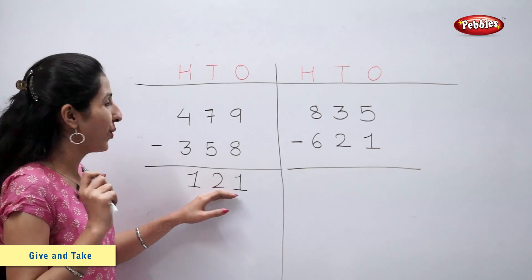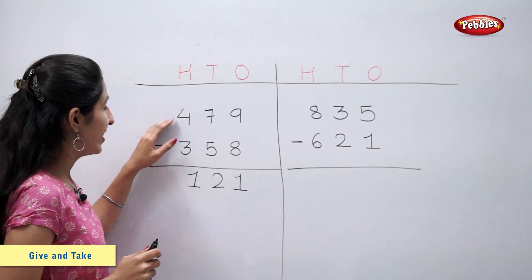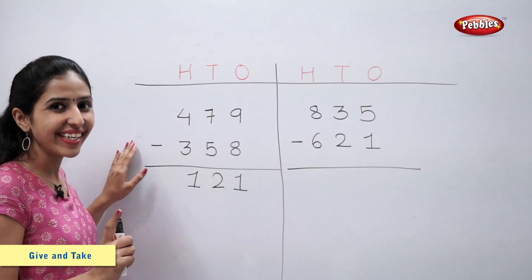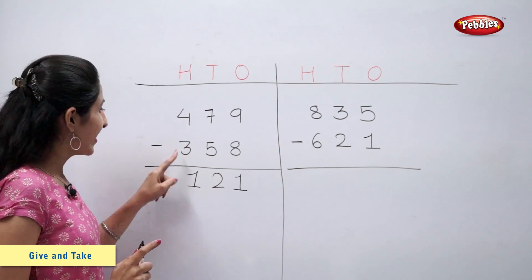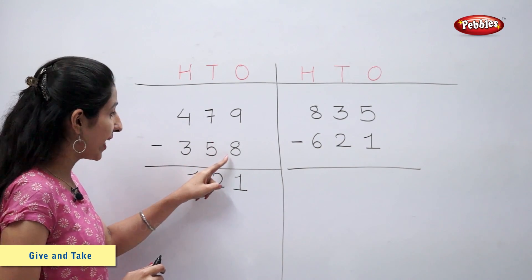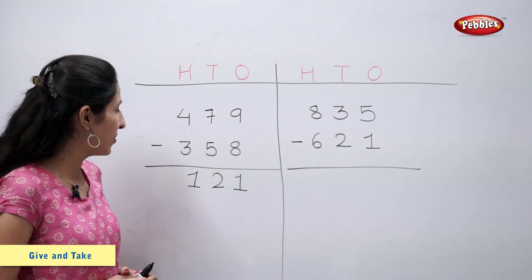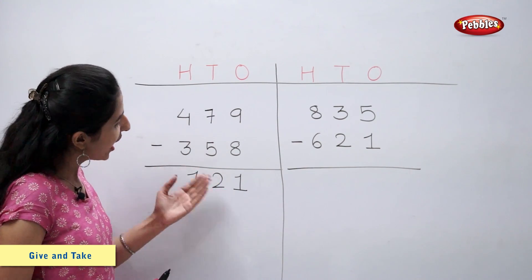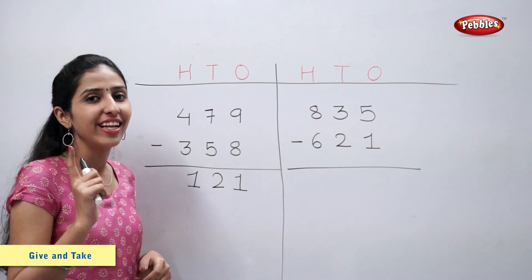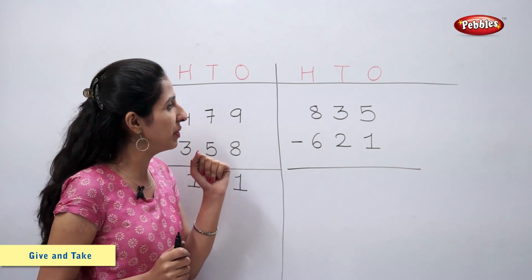So four hundred and seventy-nine minus three hundred and fifty-eight is equal to one hundred and twenty-one. Let's solve this example.